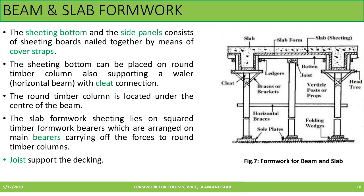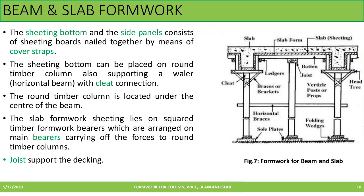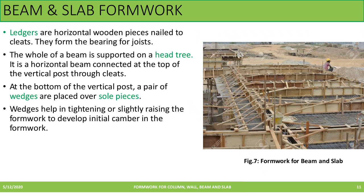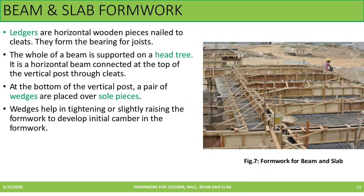Next are ledgers. These ledgers are horizontal wooden pieces nailed to cleats and form the bearing for joists. Next is the head tree. The whole of the beam is supported on a head tree, which is a horizontal beam connected to the top of the vertical post through cleats. At the bottom of the vertical post, a pair of wedges are placed over sole pieces. Wedges help in tightening or slightly raising the formwork to develop initial camber in the formwork.